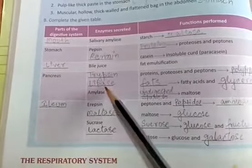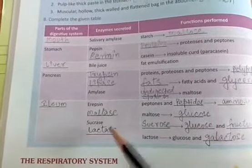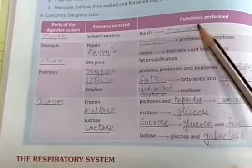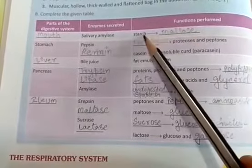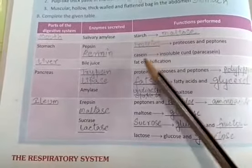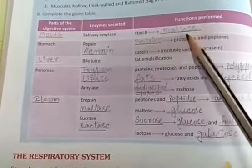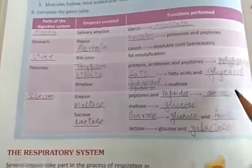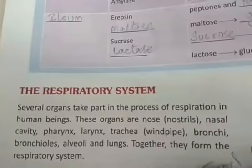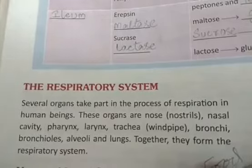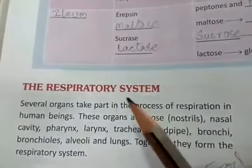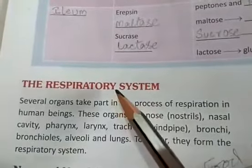Basically these are the parts of the digestive system — the enzymes and the names of the molecules. On the left-hand side you will find the bigger molecules; on the right-hand side of the arrow you will find the smaller molecules. Now the next topic is the respiratory system.